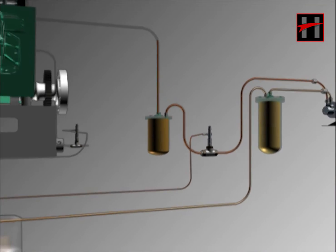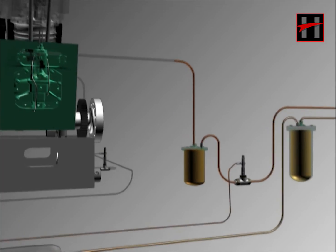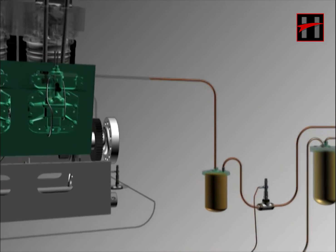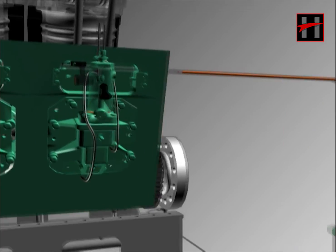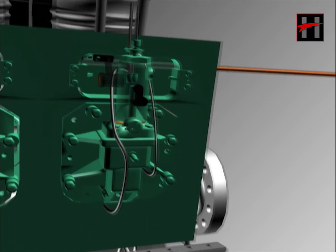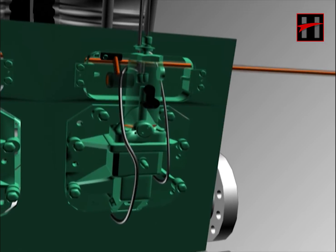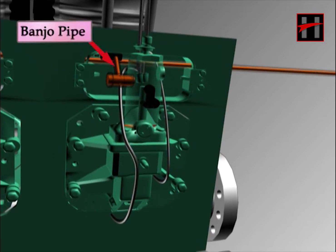Now the purified fuel oil enters the fuel header on the right side of the engine. From here, the fuel oil enters the banjo pipe through the right fuel header.